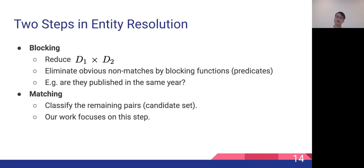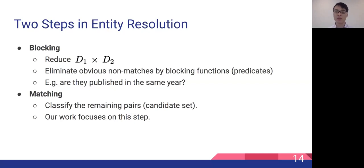Conventionally, we solve entity resolution by two steps. The first step is called blocking, where we reduce the Cartesian product by filtering out obvious mismatches, because the Cartesian product is too huge to be tractable. For example, we can eliminate tuple pairs of papers that have different year attributes. The second step is called matching, where we classify the remaining pairs in the candidate set to identify actual matches. Our work focuses on this matching step and fixes the blocking strategy in each ER scenario, ensuring fair comparisons across different matching methods.